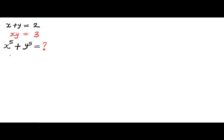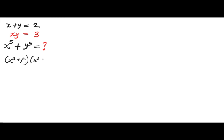you need to find two binomials that when you multiply them will give you x⁵ + y⁵. So if we multiply (x² + y²) times (x³ + y³), if you multiply this out we're going to have x⁵ + y⁵ as part of the terms.